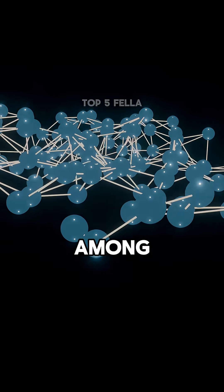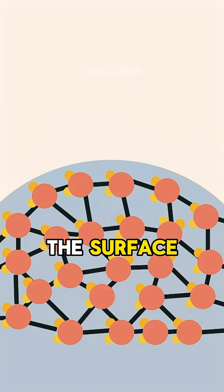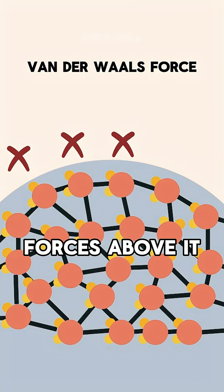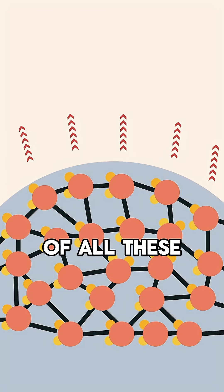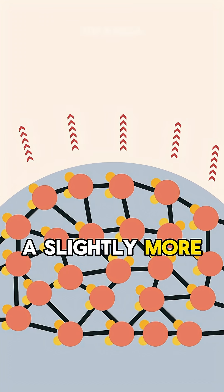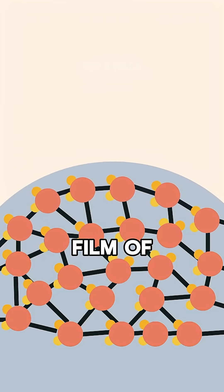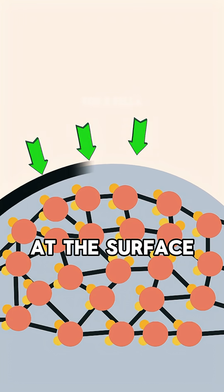They all move among each other, but at the surface, there are no Van der Waals forces above it because there's no liquid there. The net effect of all these forces is to create a slightly more concentrated film of molecules at the surface, like a membrane.